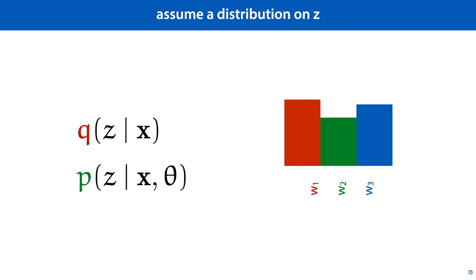We will think of it as an approximation to the probability on z given x and theta, the conditional distribution on the latent space. It could be a good approximation, or it could be a bad approximation. Now given some theta, we can actually compute this function p of z. So why introduce an approximation to a function that we can already compute? Because since q can be any function, it's not tied to a particular value of theta. q is not a function of theta, which means that in our optimization, it functions as a constant.